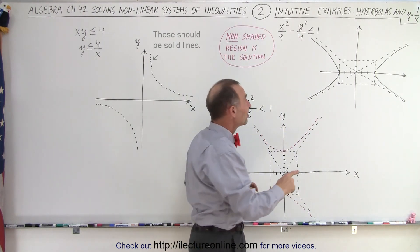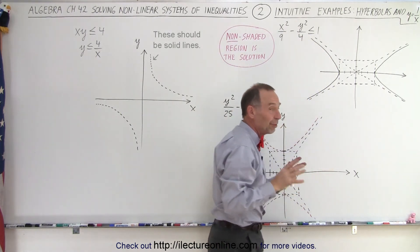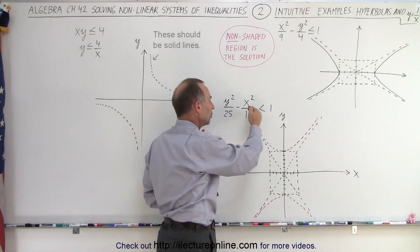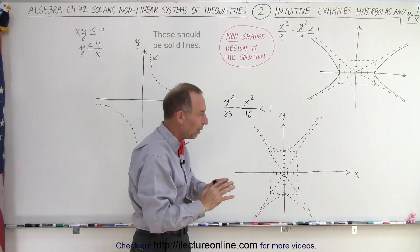When we have the equal symbol, we draw a solid line, which means the boundary is included in the solution. When we don't see the equal sign, we draw a dashed boundary because the boundary is not part of the solution.